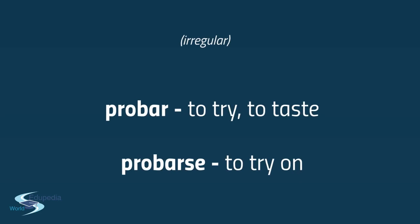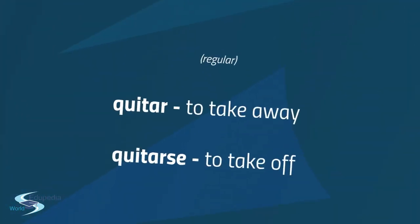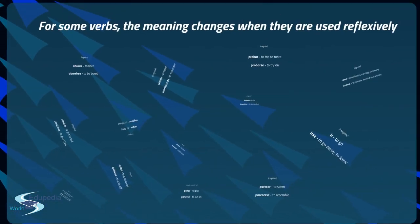Probar — an irregular verb — means to try or to taste, while probarse means to try on. Quitar — a regular verb — means to take away, while quitarse means to take off. As you can see, the differences between the reflexive and regular forms of a verb can sometimes be very significant.